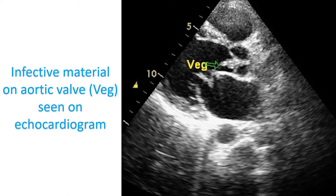An echocardiogram — an ultrasound study of the heart — is often used to pick up infective endocarditis. Small infective structures attached to the heart walls or near regions of abnormal communication between the heart chambers are the hallmark of infective endocarditis. They are called vegetations and comprise microorganisms and clot-like material. An echocardiogram will also show damage to the heart walls like a perforation of the leaflets with leak. If there is a collection of pus near the heart wall, that can also be documented by an echocardiogram.